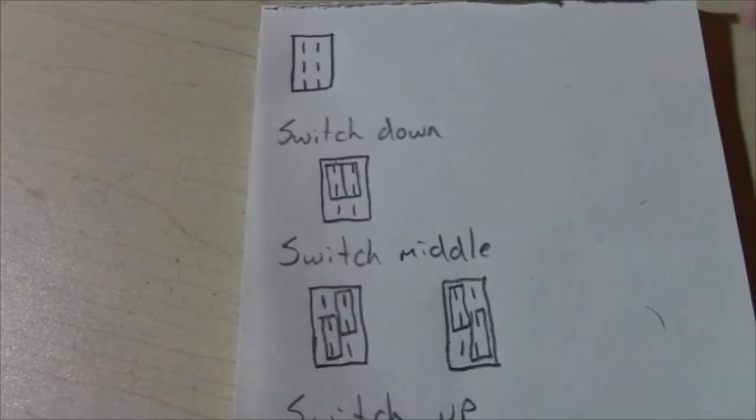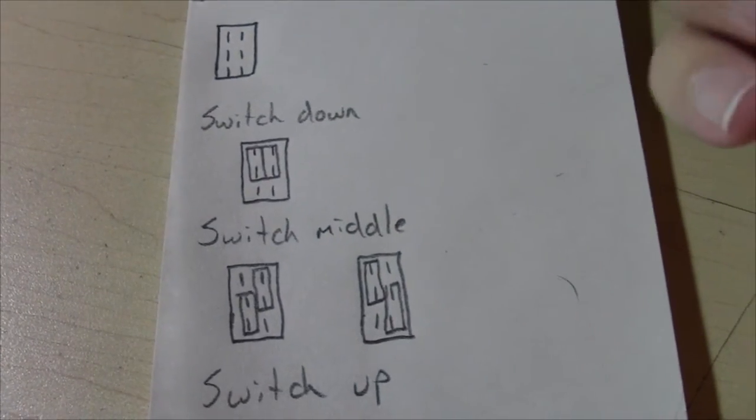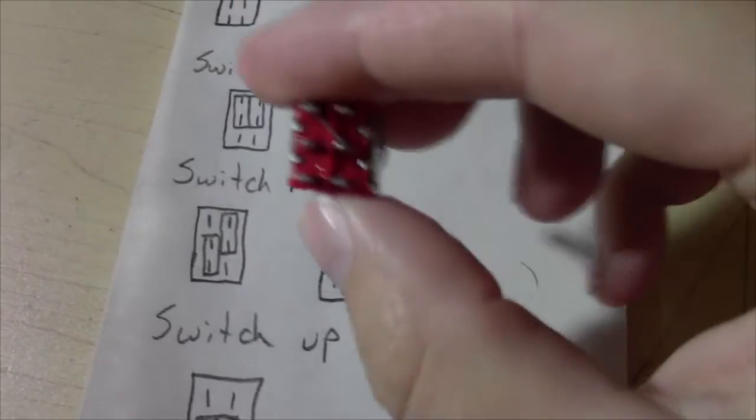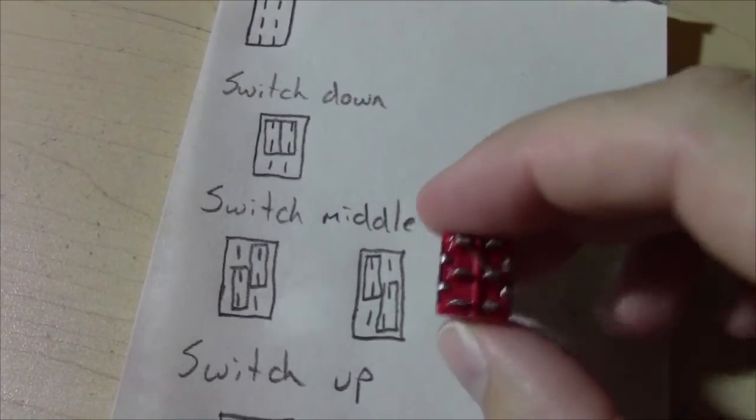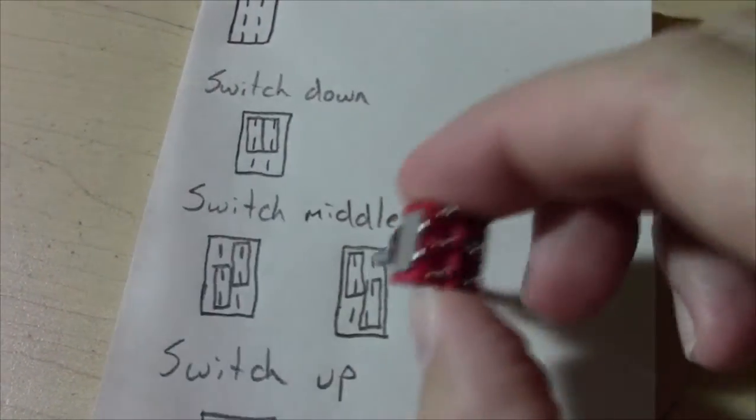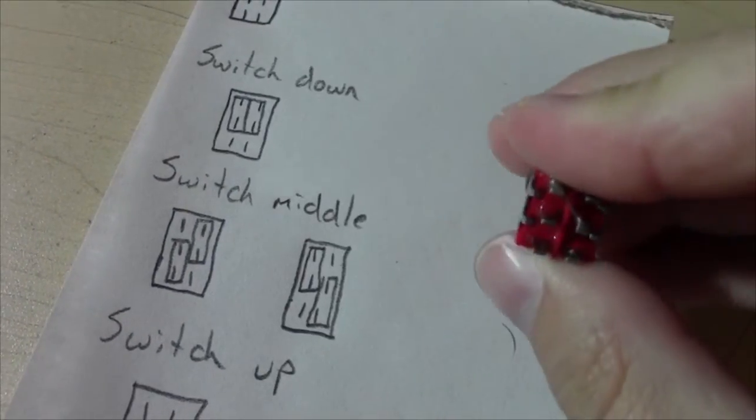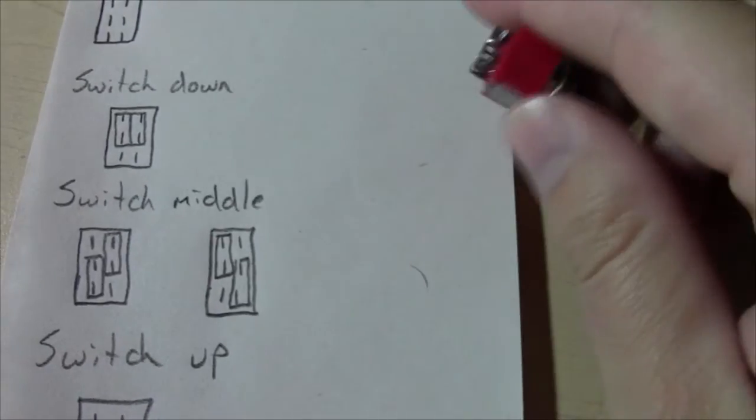So in case any of you guys ever had problems with double pole, double throw switches, it might not be your switch or your wiring. Well, it might be your wiring, but it might be because you wired it for the wrong type of switch. So make sure you keep that in mind. So I'll get to the sound clips and then I'll see you guys next time. Take it easy.